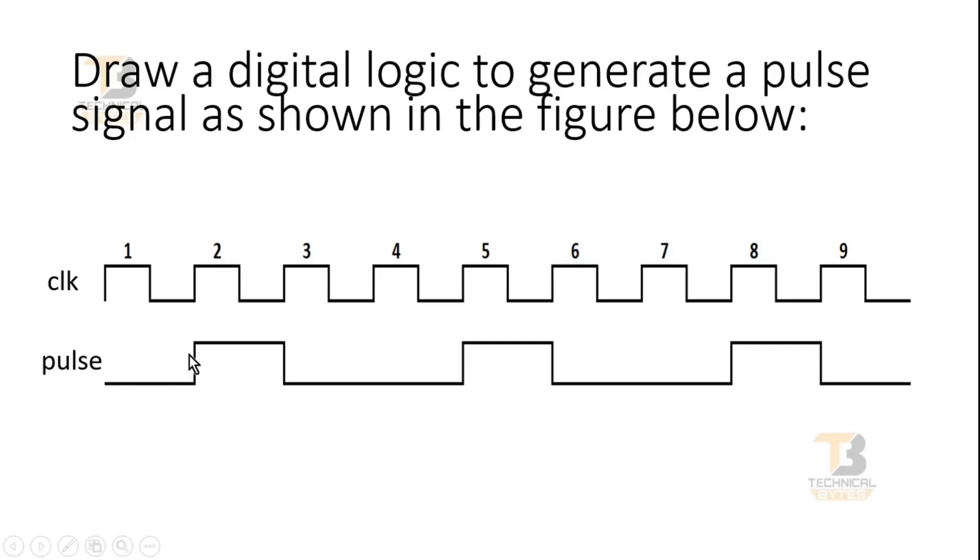And in the second clock cycle, it should go high. And for the other two clock cycles, it should remain zero. And for the next clock cycle, it should go high. And it should keep on repeating the same behavior. And the only input to our logic is clock signal.